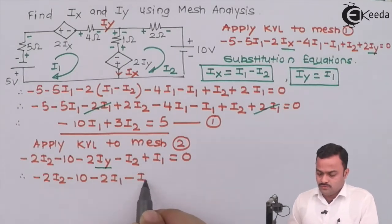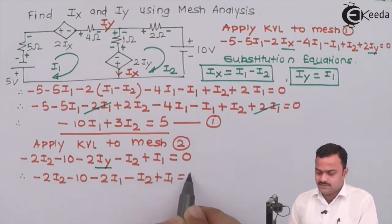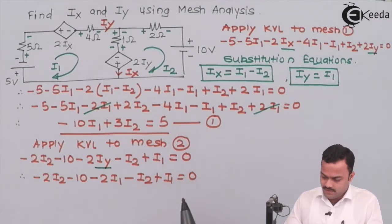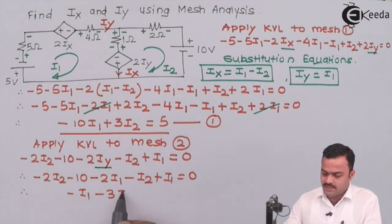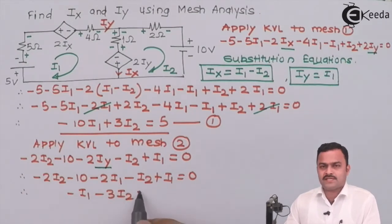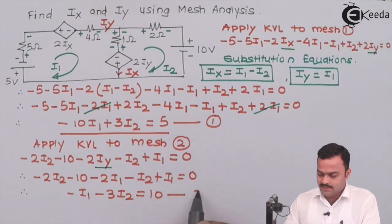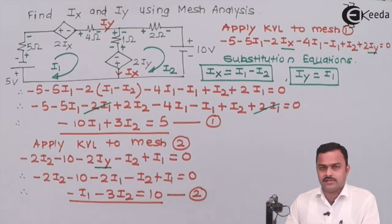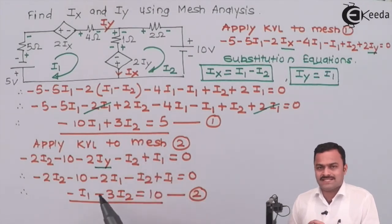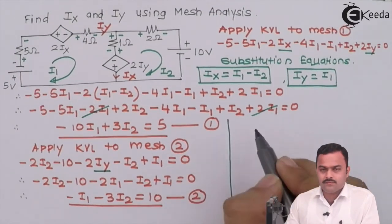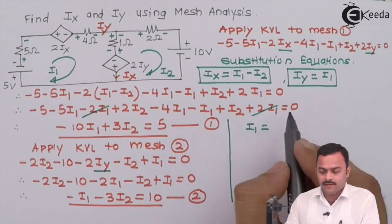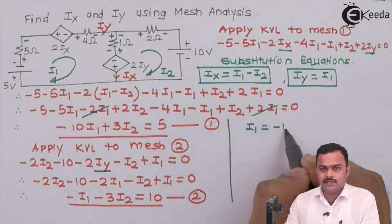For the third mesh, it is very simple because the mesh contains only a current source. When only a current source is present in a mesh, the mesh current is fixed by that current source. We just need to check the direction: i3 flows downward in this branch but the 1 ampere source is given in the upward direction.